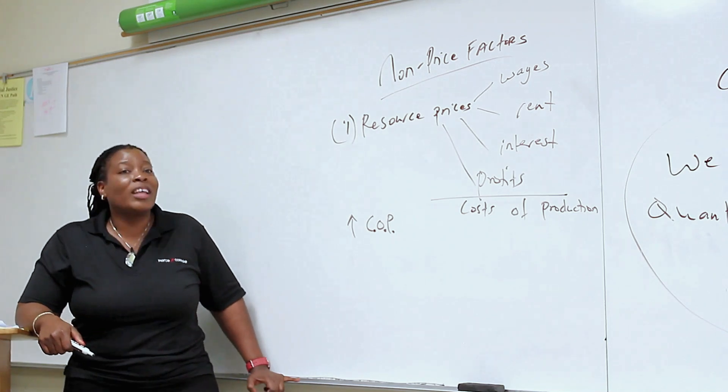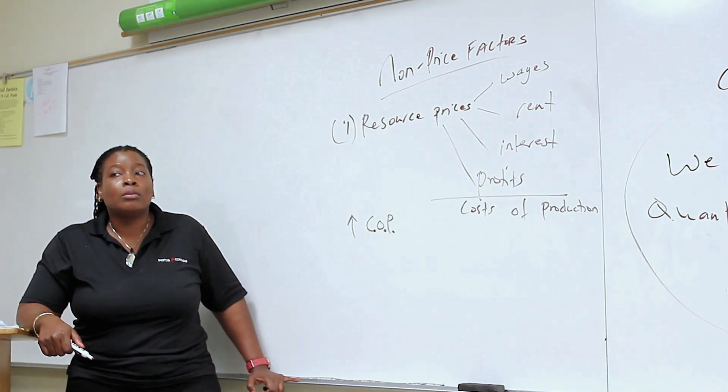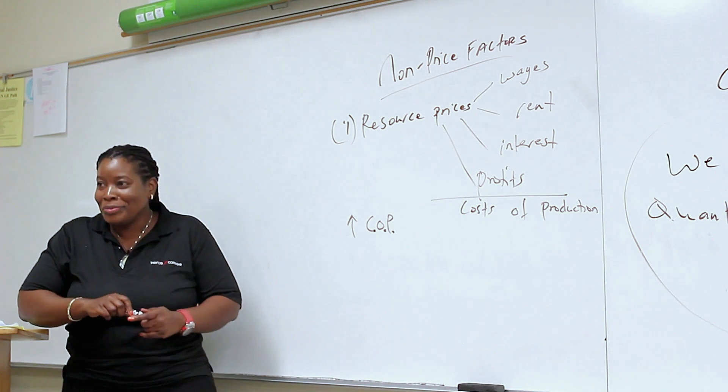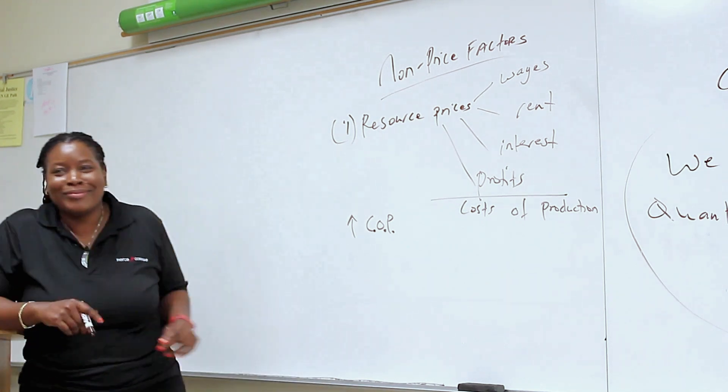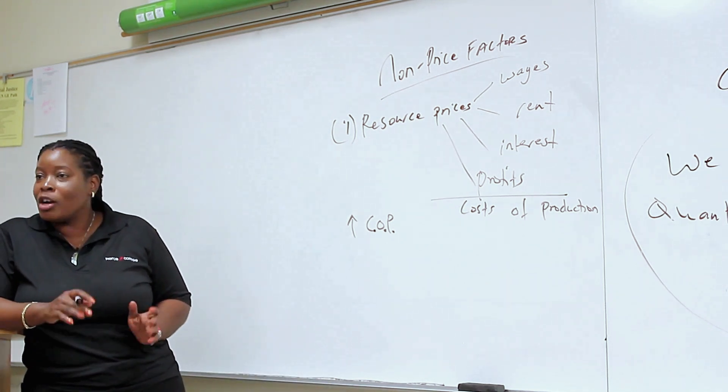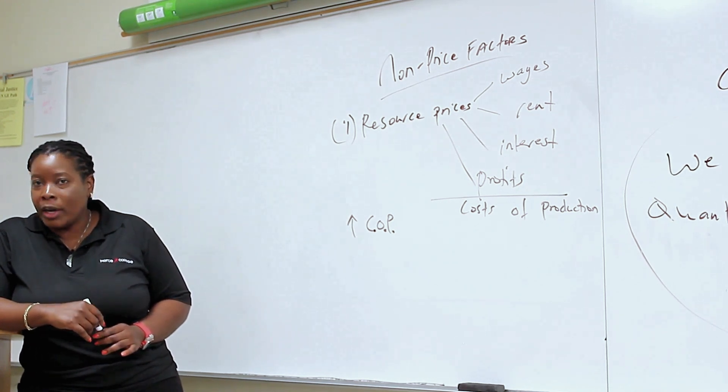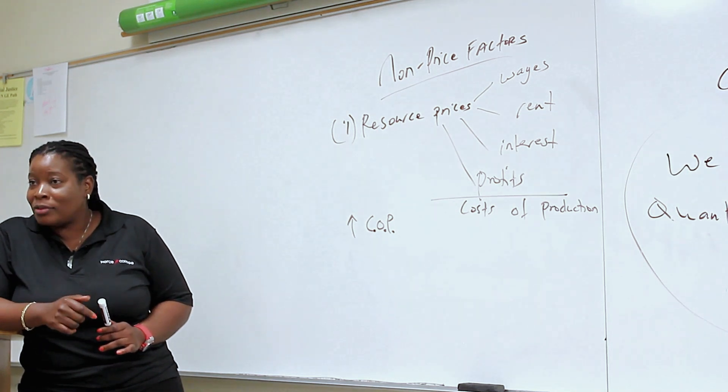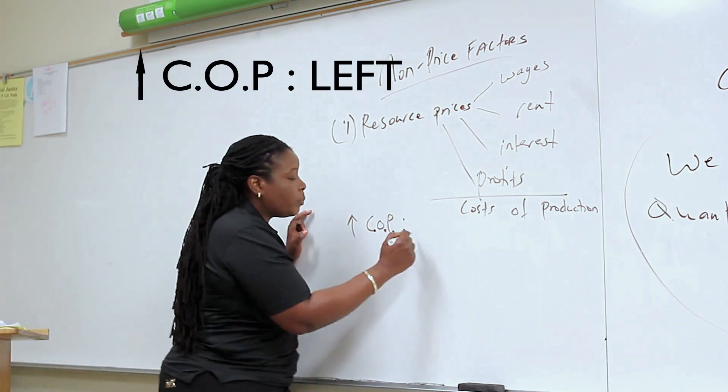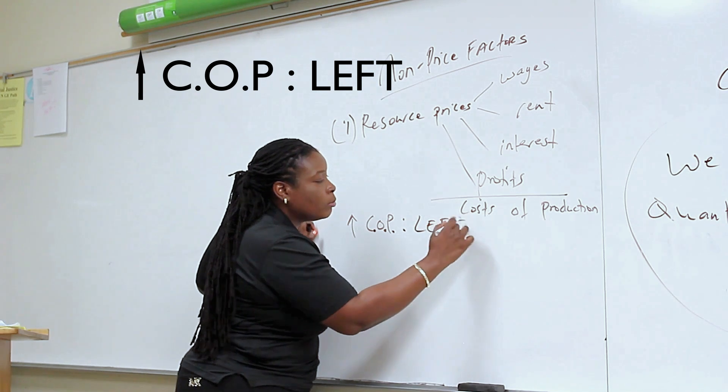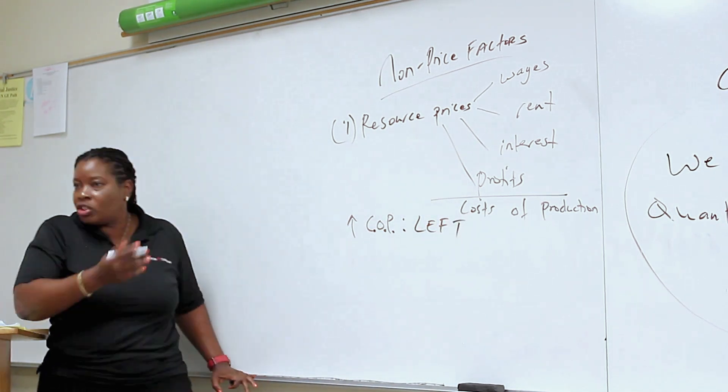It goes where? Down. The cost of production goes up. What happens to supply? It decreases. So it goes where? To the left. To the left. So the cost of production goes up, to the left. You shift it to the left.